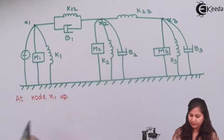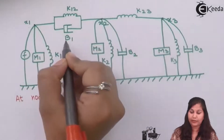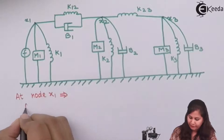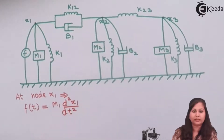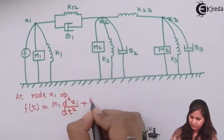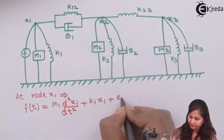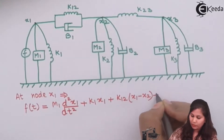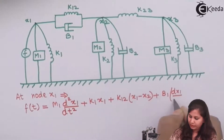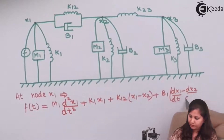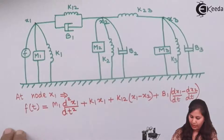At node x1, the external force f(t) acts, and the internal forces are due to m1, k1, k12, and damper b1. The nodal equation is: f(t) = m1 · d²x1/dt² + k1·x1 + k12·(x1 − x2) + b1·(dx1/dt − dx2/dt).